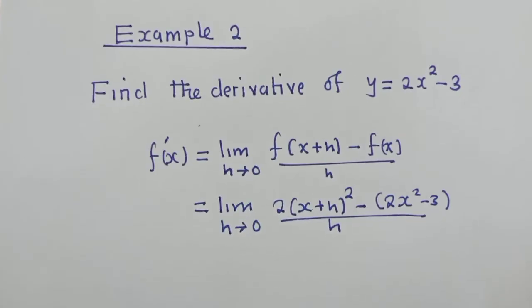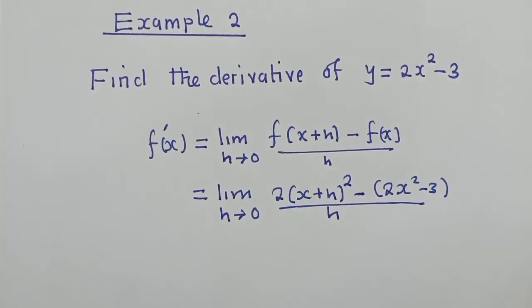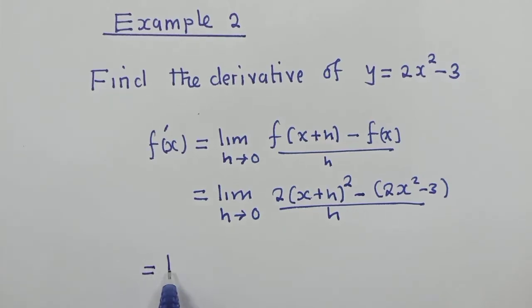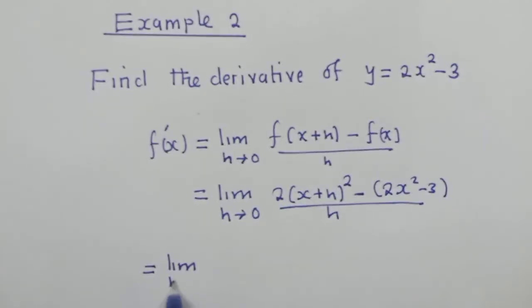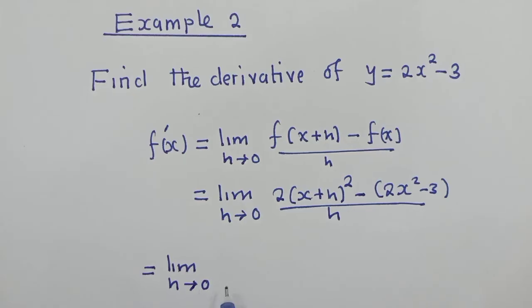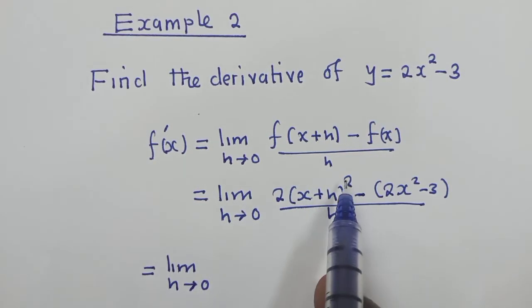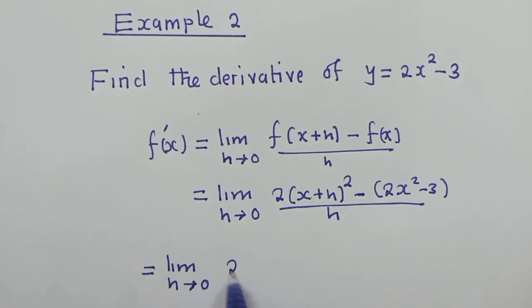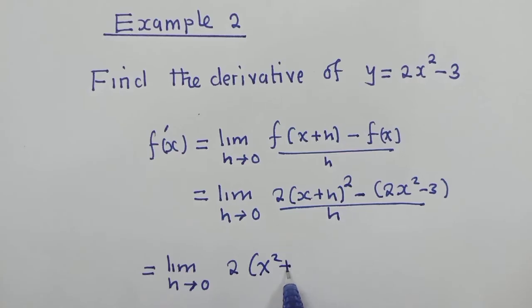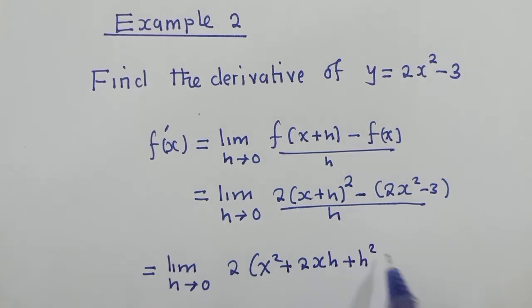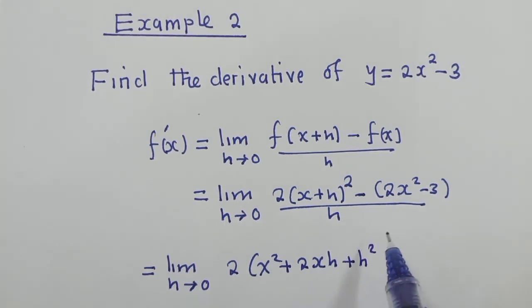So now from this point, we can work out things. So we shall say equal to limit as h approaches 0. We now multiply this by itself because of the power 2, which we have right here. Okay, so it will be x squared plus 2xh plus h squared.